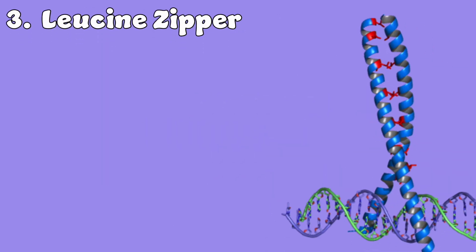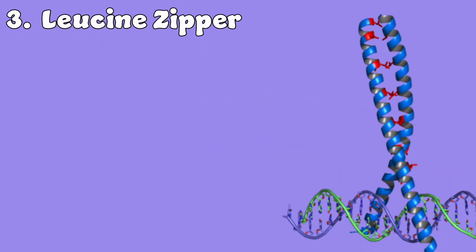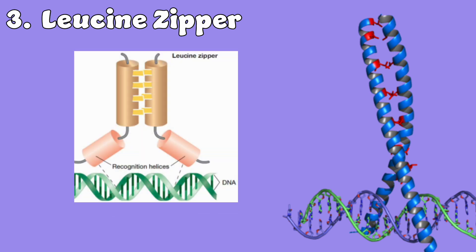Lastly, the leucine zipper. It holds two separate proteins in a dimer together. Leucine is hydrophobic, so if they're spaced, they can actually come together like a zipper, and the helices penetrate the major groove and bind these sequences. This structure promotes dimerization, meaning that if two proteins can come together, they can bind DNA. The zipper itself does not bind DNA, however. It actually just allows two DNA-binding domains to come together in the correct orientation to interact with DNA.